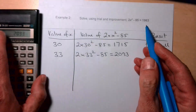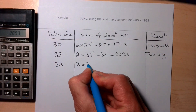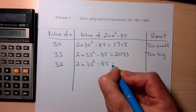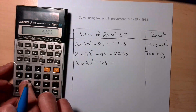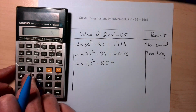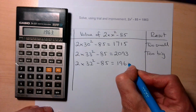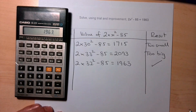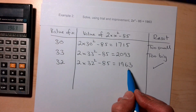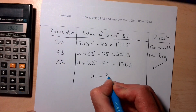Not much smaller — let's try x = 32: 2 × 32² − 85. Working that out on the calculator gives us exactly the answer we need. So x = 32.